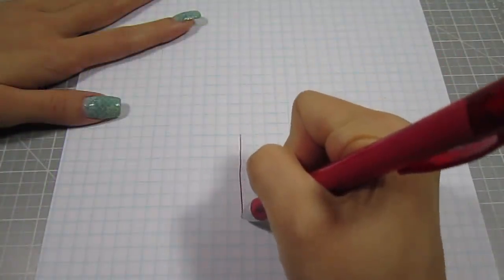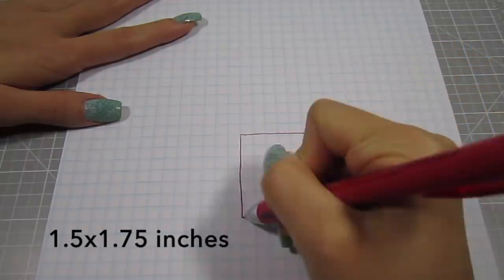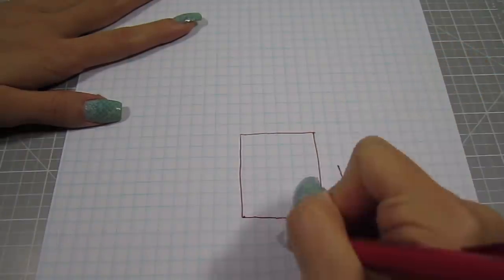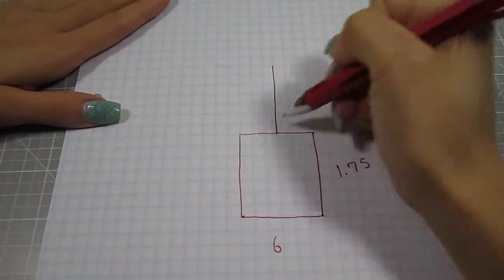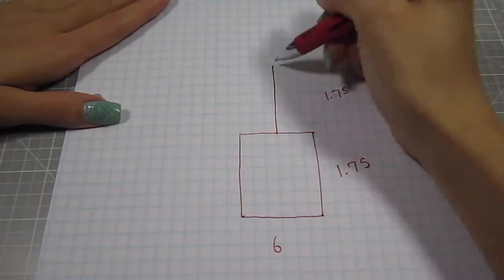The first thing we need to do is draw the template. I grab a sheet of graph paper and draw a 1.5 by 1.75 inch rectangle. I know I wrote 6 here, but I really mean 1.5 inches. Here I'm showing you the length of the guitar neck which will extend 1.75 inches past the body.